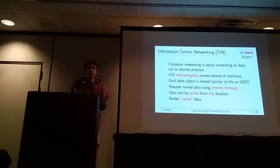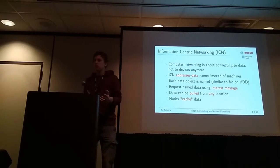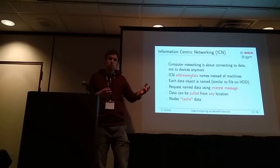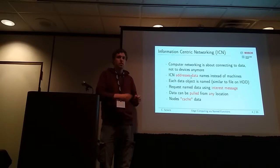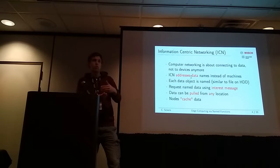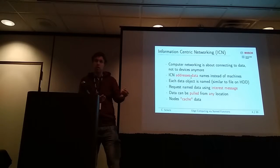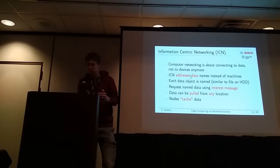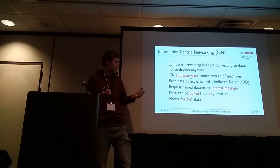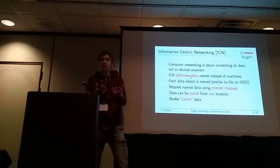As the devices themselves changed, also the network changed. At the beginning, we had just devices connecting to each other — for example, you connected your workstation to another workstation or to a printer. But today, mostly people are tracing data instead of machines. If you want to watch a YouTube video, you're not interested in which machine it comes from; you're just interested in the file you want to receive. That's what information-centric networking is about: we address data by their name and name each data object in the network like you name a file on your disk.